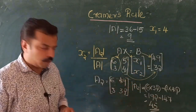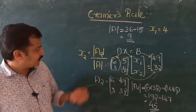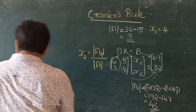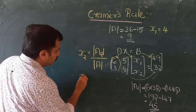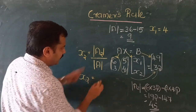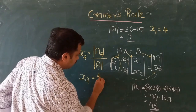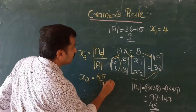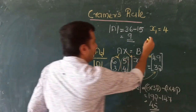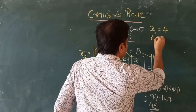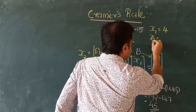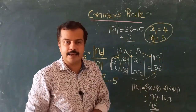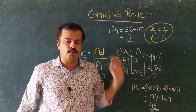The determinant of A2 is 45. So x2 equals the determinant of A2 divided by the determinant of A — that is 45 divided by 9 — so the solution is 5. Therefore x1 equals 4 and x2 equals 5. This is our solution for the linear equations using Cramer's rule with determinants.